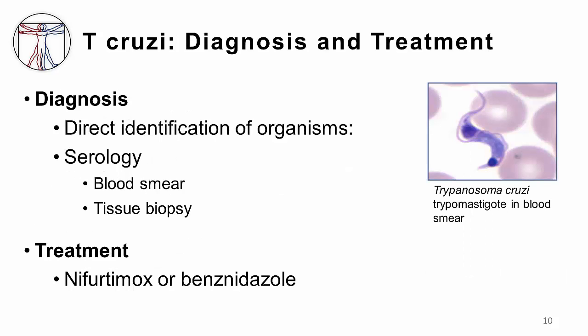Laboratory diagnosis centers around the direct identification of organisms via a thick and thin smear, as well as serology. In the blood smear, you may see characteristic parasitic forms that are flagellated. However, this diagnostic test is fairly insensitive, and we usually send our samples to an outside lab or to the Centers for Disease Control for serologic testing. Serology may be done both from the blood sample or from tissue biopsy. Treatment is via the anti-parasitics nifurtimox or benznidazole. Prevention with insect control and improved hygiene and infrastructure is very critical for stemming this disease in the Americas.